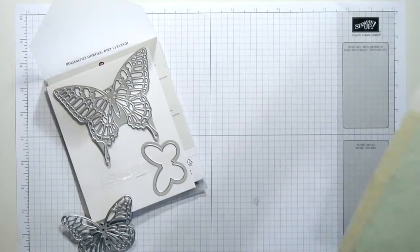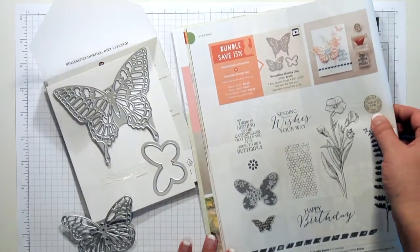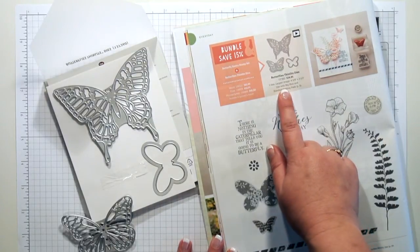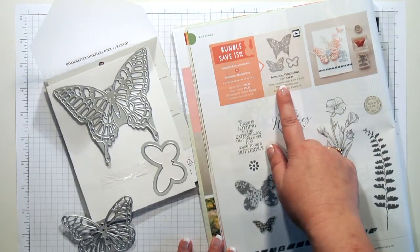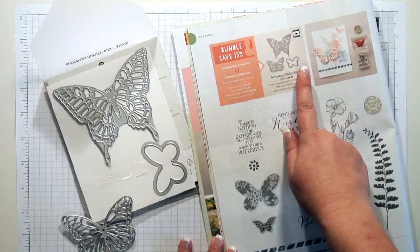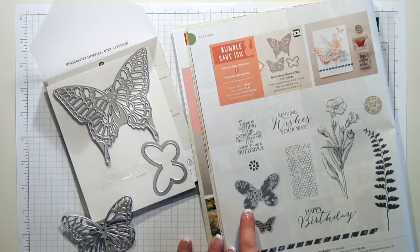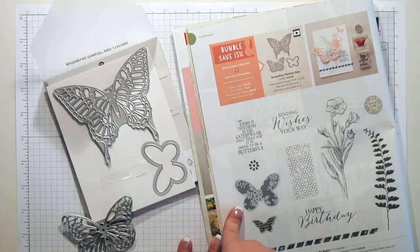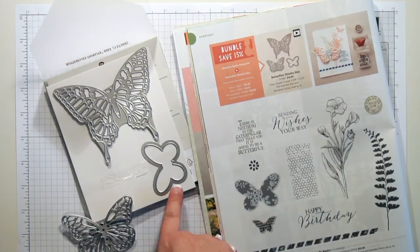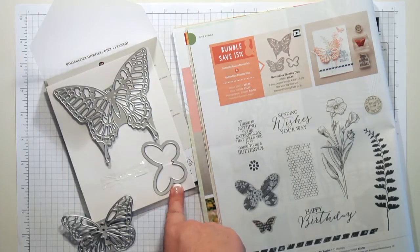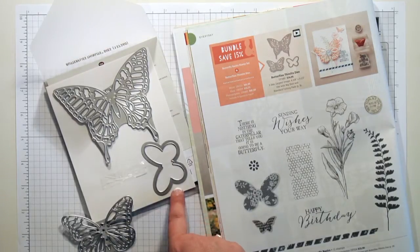These dies are right here on page 26, so you can see here are the butterfly thinlit dies. They come with three dies, and check out this stamp set down here below.